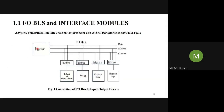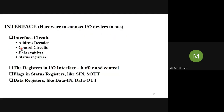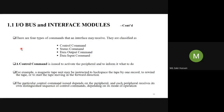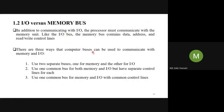In addition to this processor talking to this I/O device, to this I/O bus, it should be able to communicate with memory also. For that reason, we call something called Memory Bus. The processor must communicate with the memory unit like the I/O Bus. The Memory Bus contains data, address,